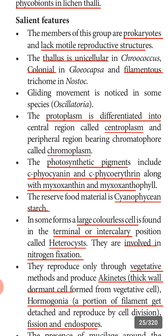The photosynthetic pigments present in cyanobacteria are c-phycocyanin and c-phycoerythrin, along with myxoxanthin and myxoxanthophyll. The reserve food material is cyanophysean starch. In some forms, large colorless cells are formed in the terminal or intercalary position; they are called heterocysts and are involved in nitrogen fixation.